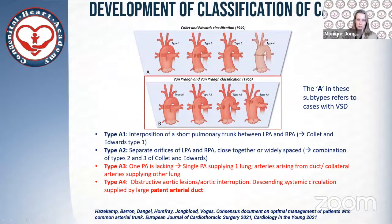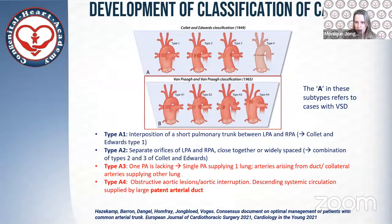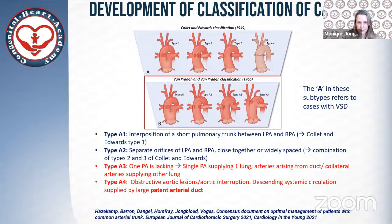The Collett and Edwards classification was used for many years, but it did not consider aortic or pulmonary dominance caused by obstructive lesions or non-confluent pulmonary arteries. In 1965 the classification was revised by Van Praag, also to include cases with a single pulmonary artery supplying one lung, and cases with hypoplasia, coarctation, atresia, or absence of the aortic isthmus — leaving the systemic circulation dependent on supply by a large patent arterial duct. Types one and two are the same as the original classification, but types three and four also take into account interruption of the aorta and one missing pulmonary artery.